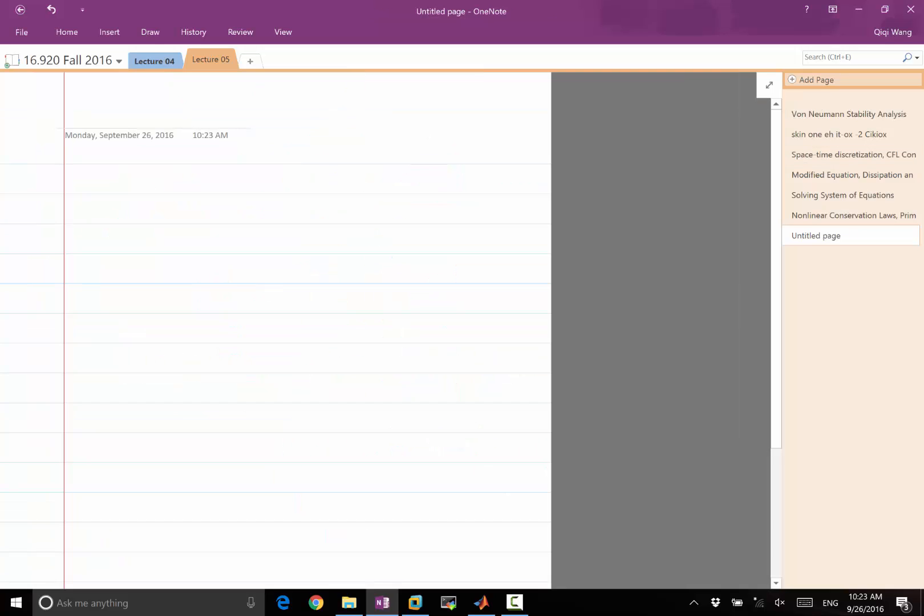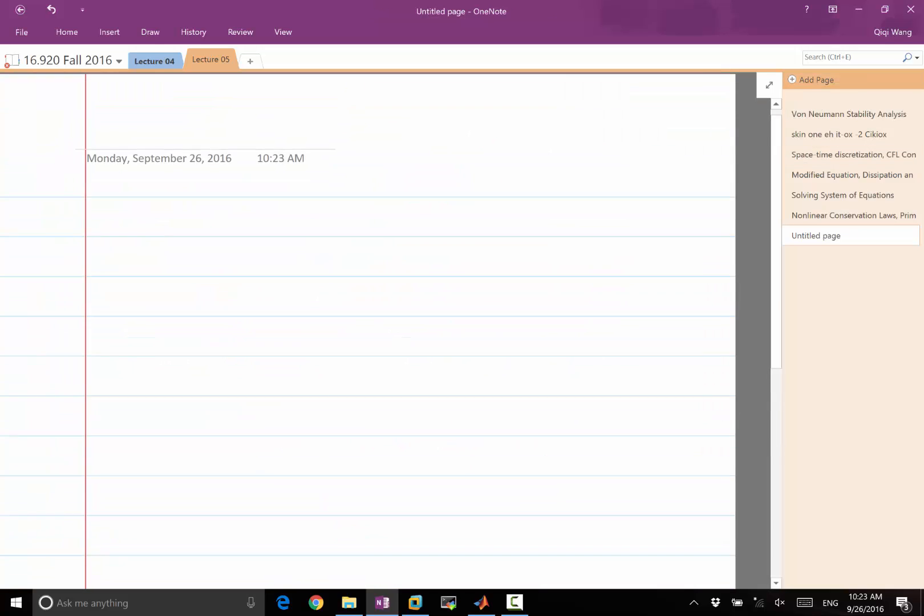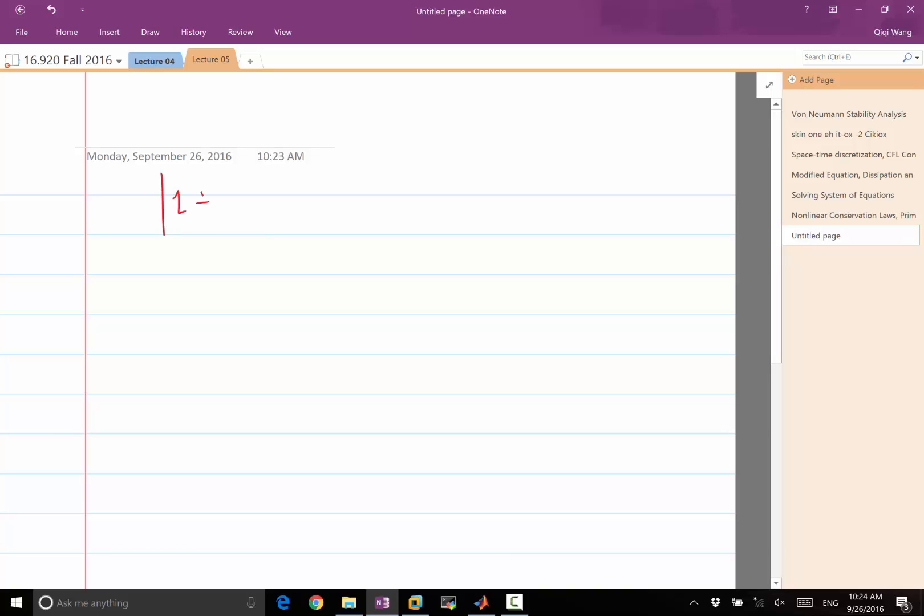Let's copy what we had in the last slide. Delta t kappa over delta x squared times 2 cosine delta x times k minus 2 has to be less than 1.